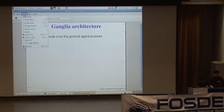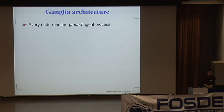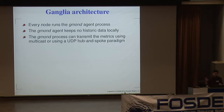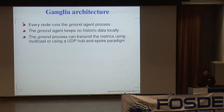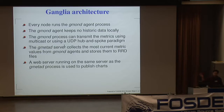Let's talk about the architecture. Every node runs the gmond agent, which runs on individual hosts. It doesn't keep any historic data locally — the data is just sent around. By default, metric data is transmitted using multicast. In environments where multicast could be considered chatty, you can use unicast UDP packets to reduce the amount of network traffic. Then you have the gmetad server that aggregates all the data and stores it in RRD files.